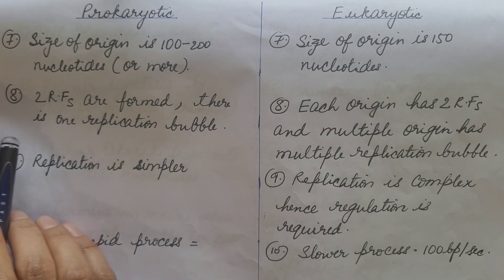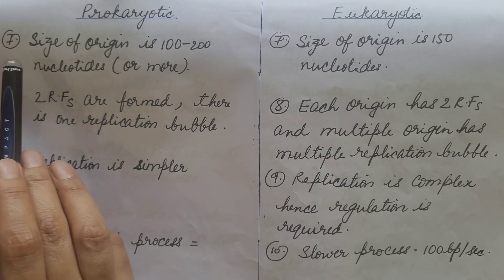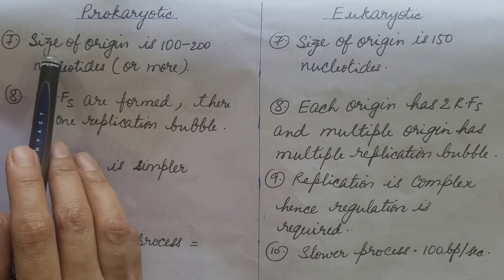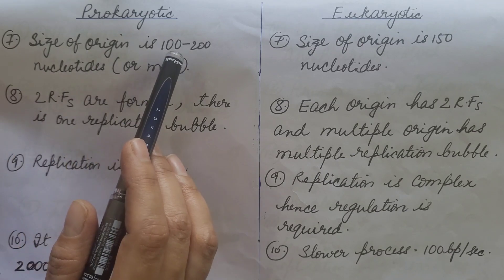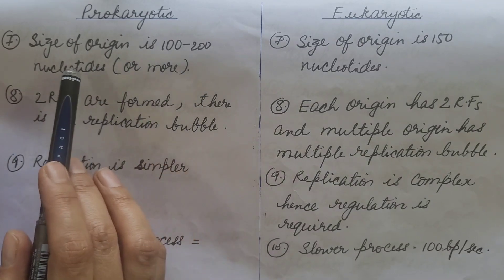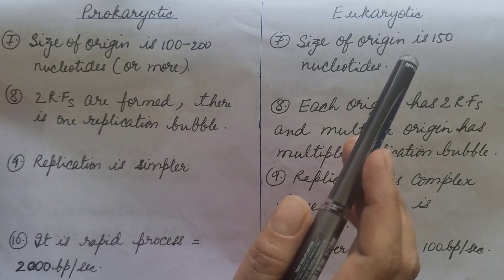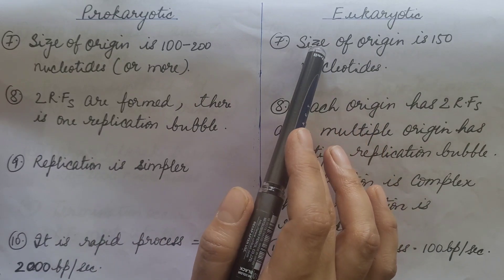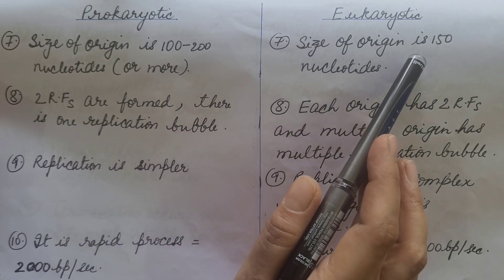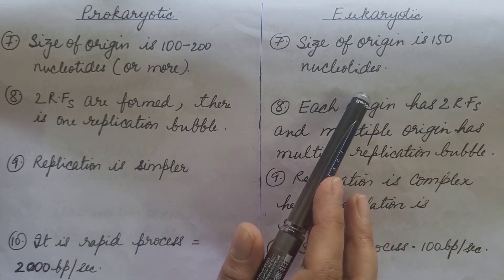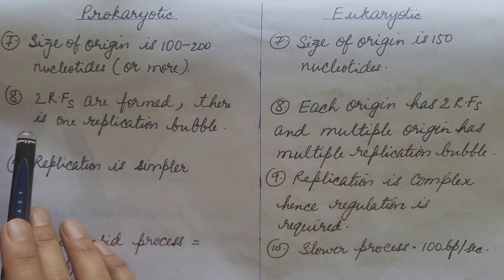Regarding the size of the origin: in prokaryotes, the size of the origin is 100 to 200 nucleotides or more. In eukaryotes, the size of the origin is 150 nucleotides.